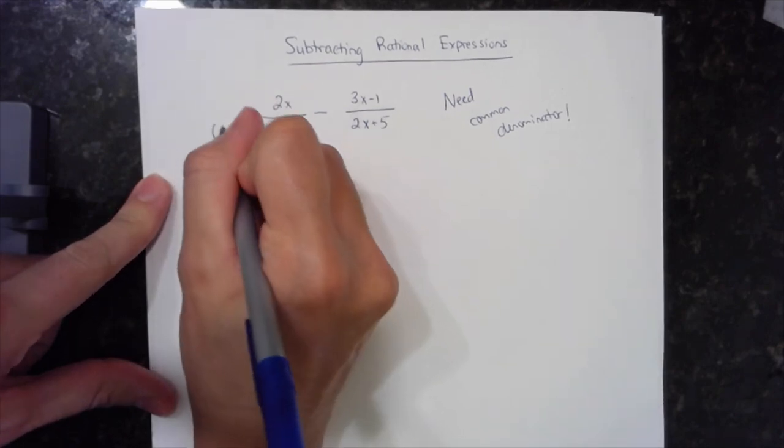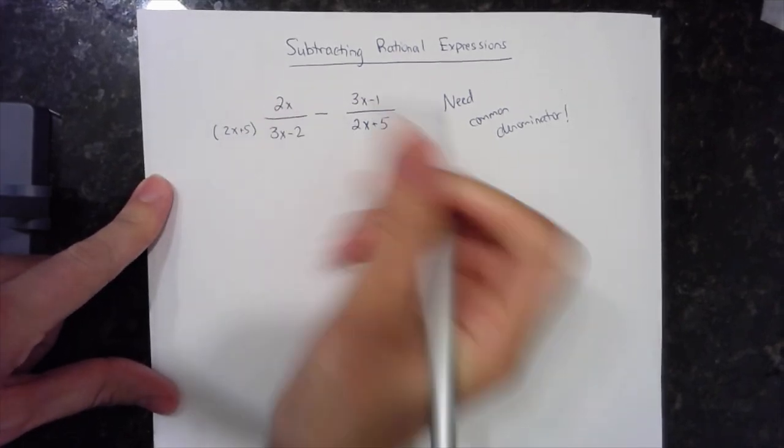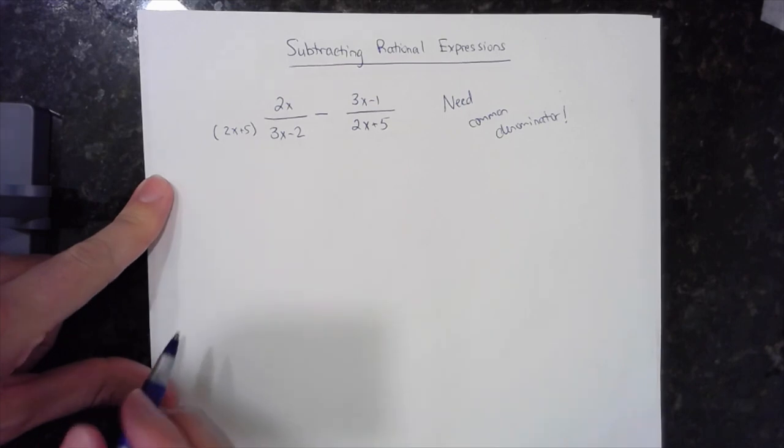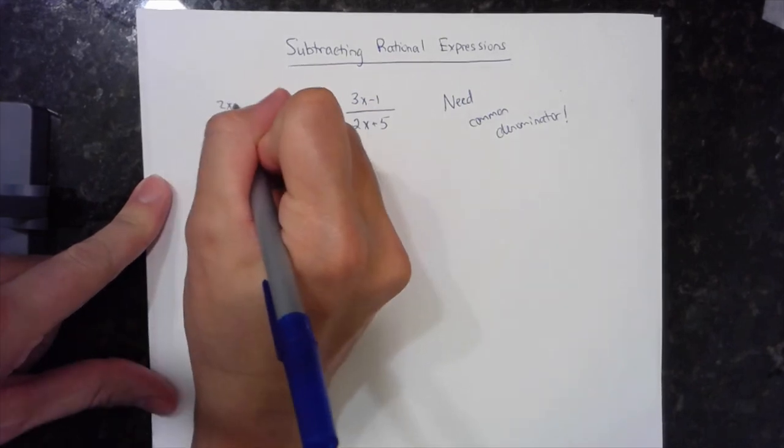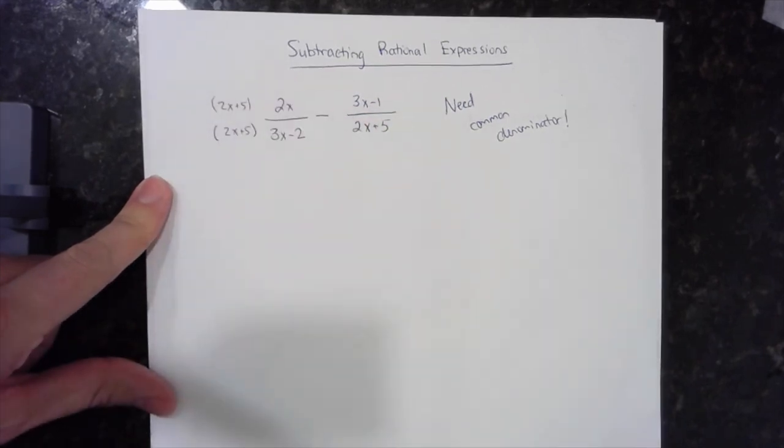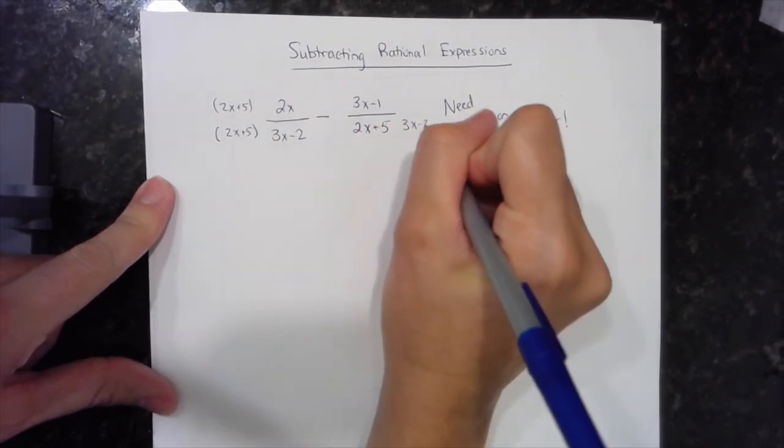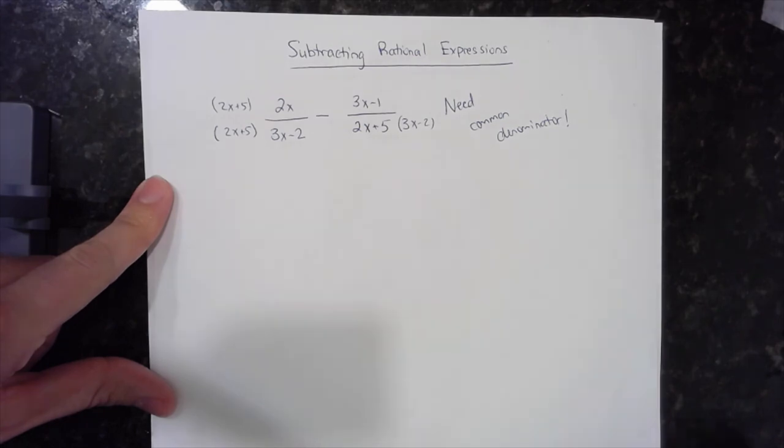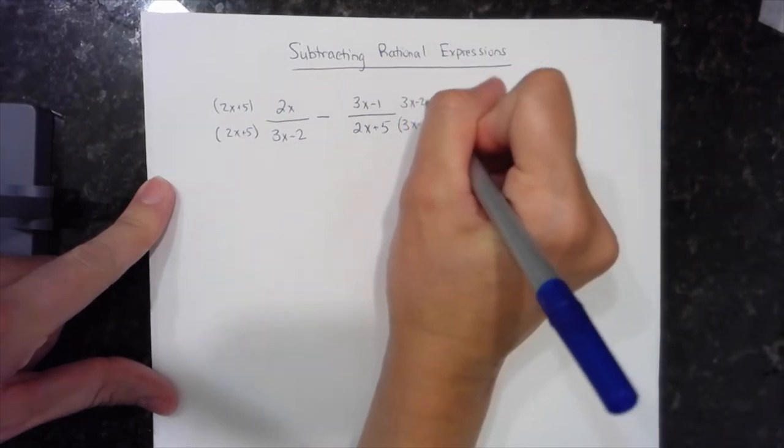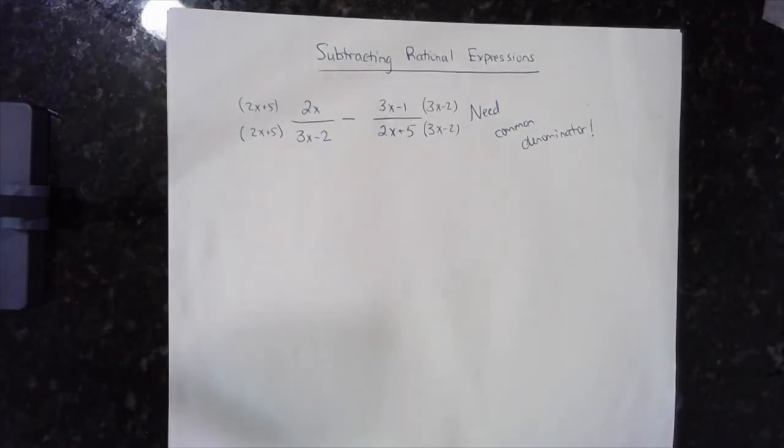So this guy would need 2x plus 5 to be multiplied by this denominator. Whatever I do to the bottom of a fraction, I do to the top. And this guy would need a 3x minus 2 multiplied by its denominator and anything also that I do to the bottom, I also do to the top.